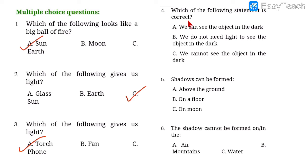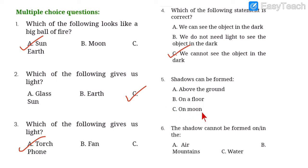Number four: which of the following statements is correct? Statement A — we can see the object in the dark — is incorrect. Statement B — we do not need light to see the object in the dark — is also incorrect. Statement C — we cannot see the object in the dark — is correct, because when there is no light you cannot see objects. Option C is correct.